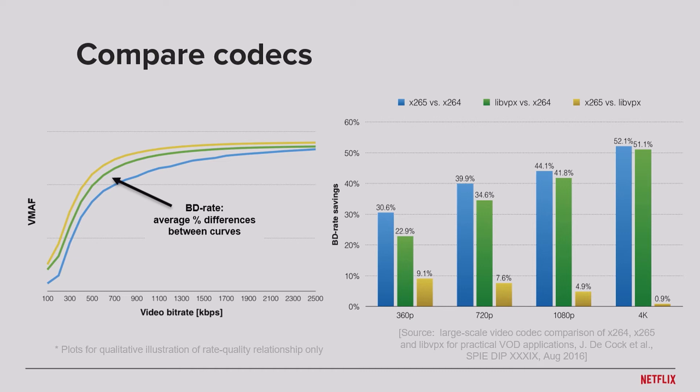The comparison diagram shows how much percent one codec performs over the other. In this particular case, we're comparing X265, X264, and VP9. Those diagrams give us the results of the codec comparison, and we're going to be making decisions based on that.